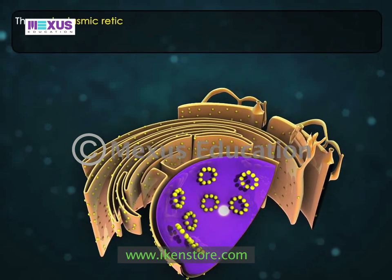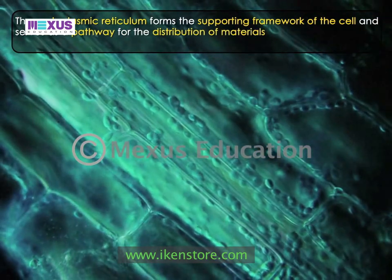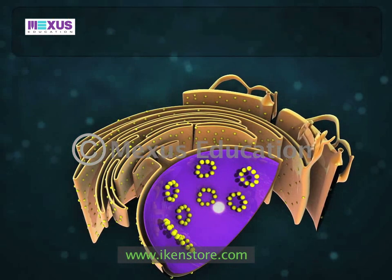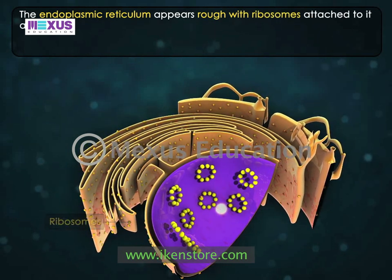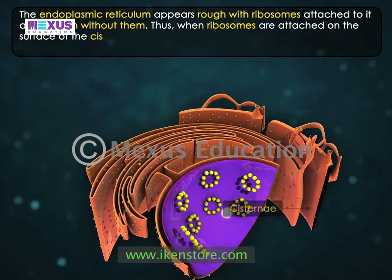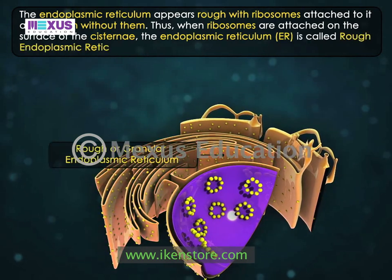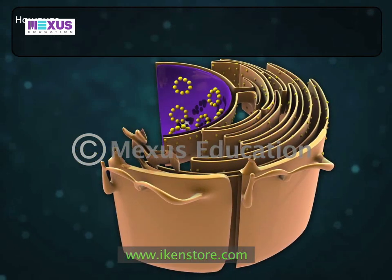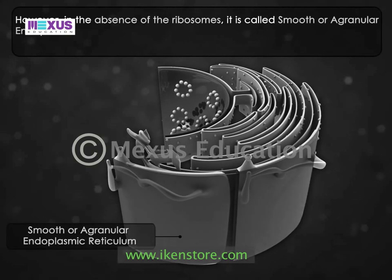The endoplasmic reticulum forms the supporting framework of the cell and serves as a pathway for the distribution of materials from one part of the cell to the other. The endoplasmic reticulum appears rough with ribosomes attached to it and smooth without them. Thus, when ribosomes are attached on the surface of the cisternae, the endoplasmic reticulum (ER) is called rough endoplasmic reticulum or granular endoplasmic reticulum. However, in the absence of the ribosomes, it is called smooth or agranular endoplasmic reticulum.